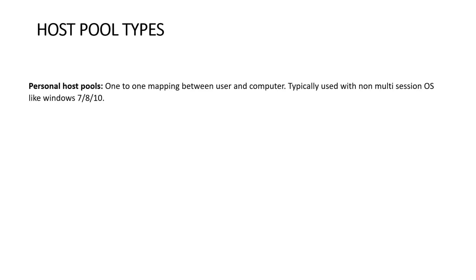Let's understand host pool types. There are two types of host pool. The first one is personal host pool — this is a one-to-one mapping. In layman terms, one machine, one user. Multiple users cannot access that host pool at the same time; only one user can access that session host at a time. This is typically used with non-multi-session operating systems like Windows 7, 8, or 10.